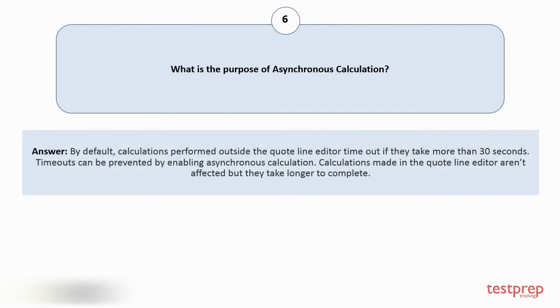Question number six: What is the purpose of asynchronous calculation? By default, calculations performed outside the quote line editor time out if they take more than 30 seconds. Timeouts can be prevented by enabling asynchronous calculation. Calculations made in the quote line editor aren't affected, but they take longer to complete.